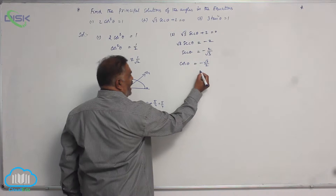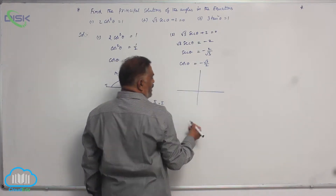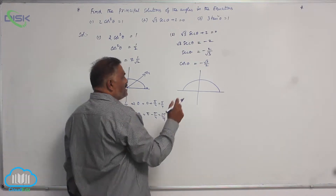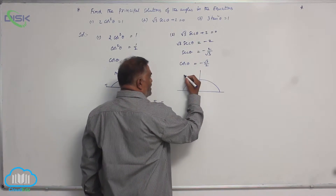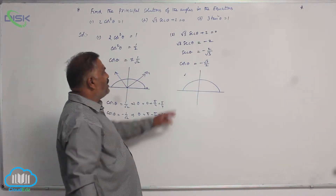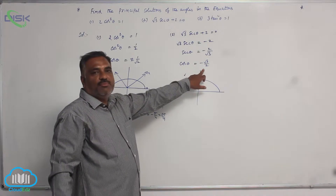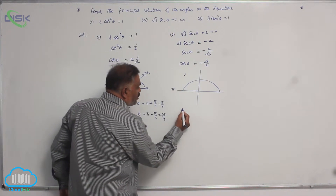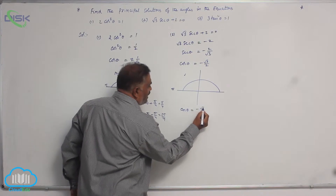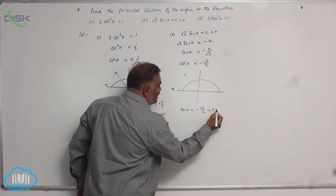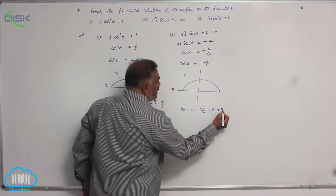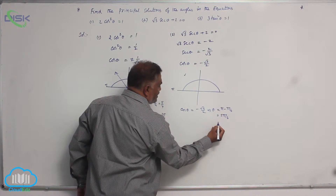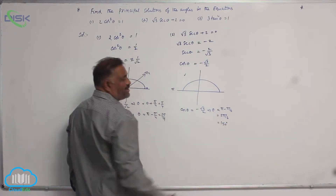Again, the domain is 0 to pi. Cos is negative in the second quadrant. Since the value is a multiple of 30 degrees, cos theta equal to minus root 3 by 2 implies theta is equal to pi minus pi by 6, that is 5 pi by 6, or 150 degrees.